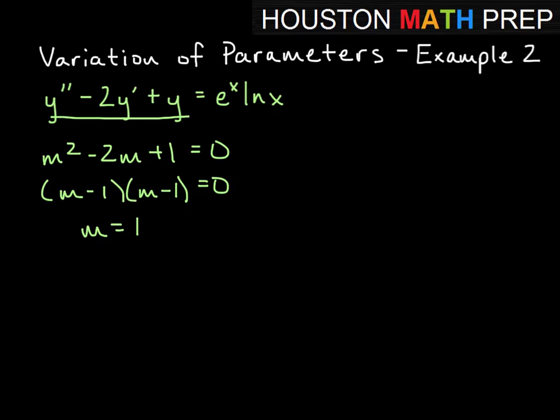So if we were writing down our complementary function, we would say y sub c equals c1 e to the x, and then in order to have linear independence for our second term, we would need to multiply in that x term there. So c2 x e to the x would be our complementary function based on work we did with the auxiliary equation with the homogeneous example.